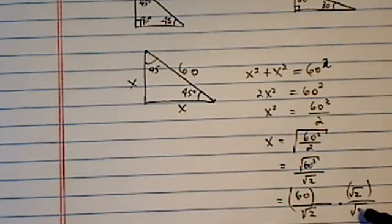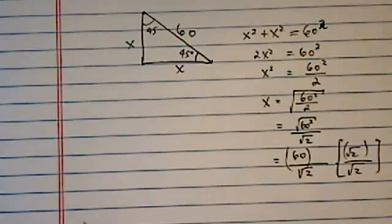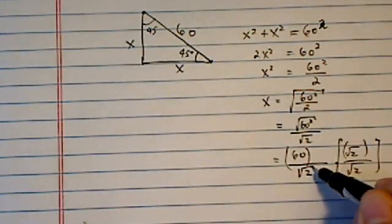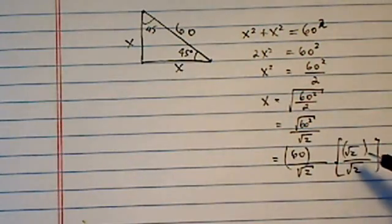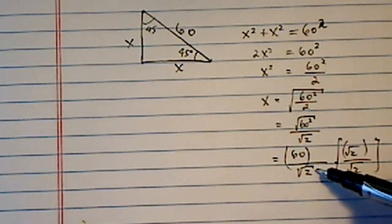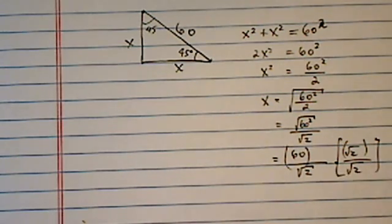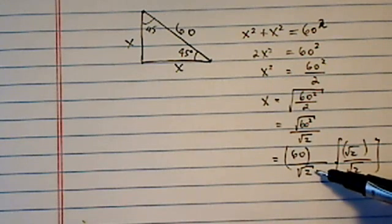Now, mathematicians are weird, they insist on having the radical not show up on the bottom of the denominator here, and that's because earlier before we had calculators, dividing by radical two is a very difficult thing. Radical two is 1.414 and keeps on with non-repeating decimals.